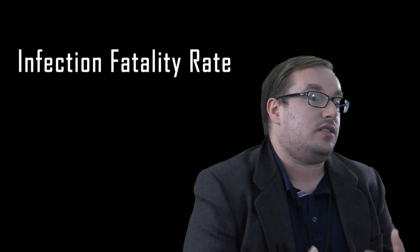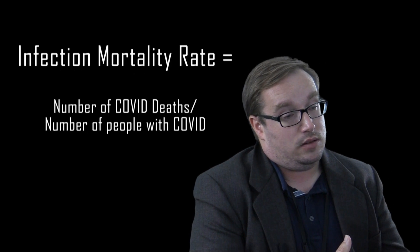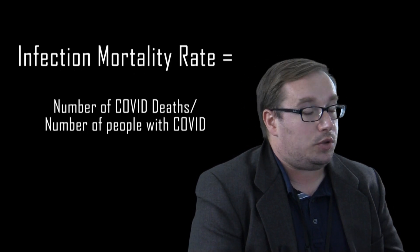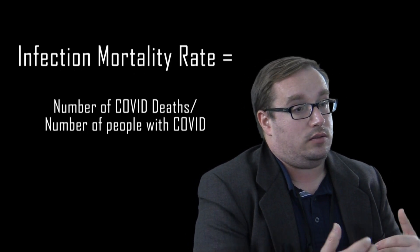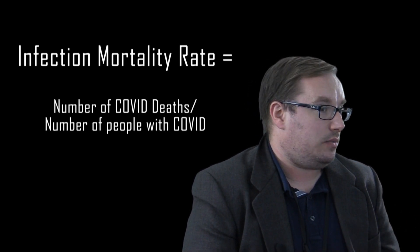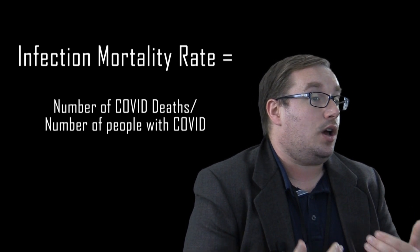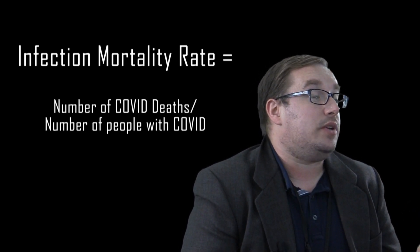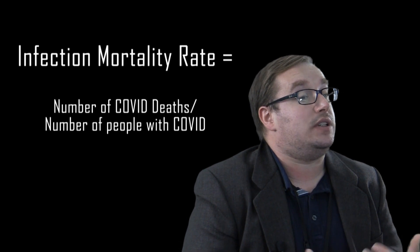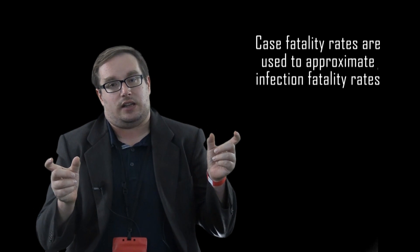The third one is the infection fatality rate, and that is the number of people who die divided by the total number of people who are infected with the virus. Now that is much more difficult to estimate than case fatality rates because we don't necessarily know how many people have been infected. We only know how many people have been diagnosed. We use case fatality rates to approximate infection fatality rates.